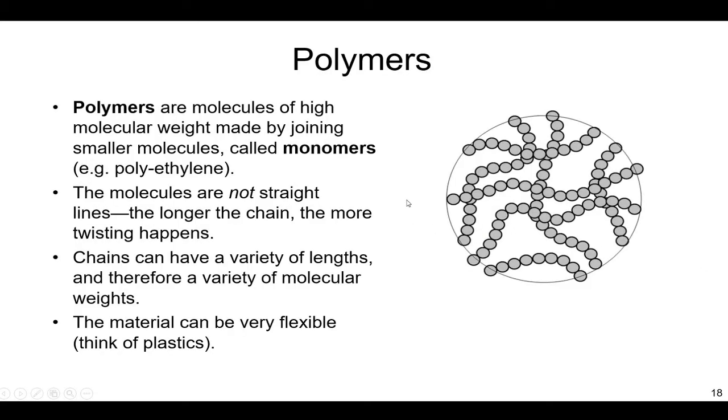Today we're going to talk about polymers and nanomaterials, and these are the two newest forms of solids. Polymers being the first, and these are really molecules of high molecular weight made by joining smaller molecules together, and these smaller molecules are monomers.